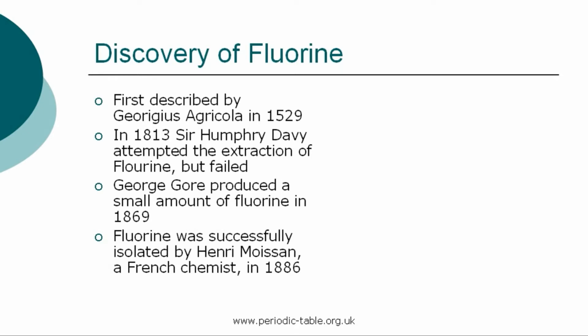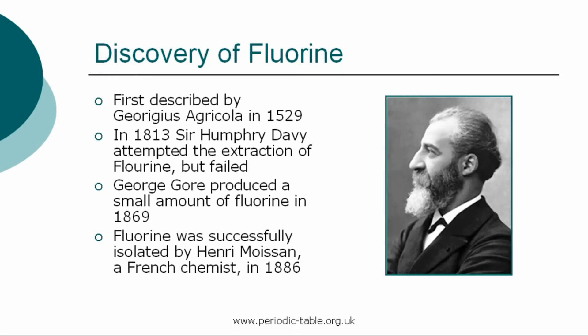It was successfully isolated by Henri Moissan, a French chemist, in 1886. He achieved this through the electrolysis of potassium fluoride and hydrofluoric acid. In 1906, Henri Moissan won the Nobel Prize in Chemistry for his work in isolating fluorine from its compounds.